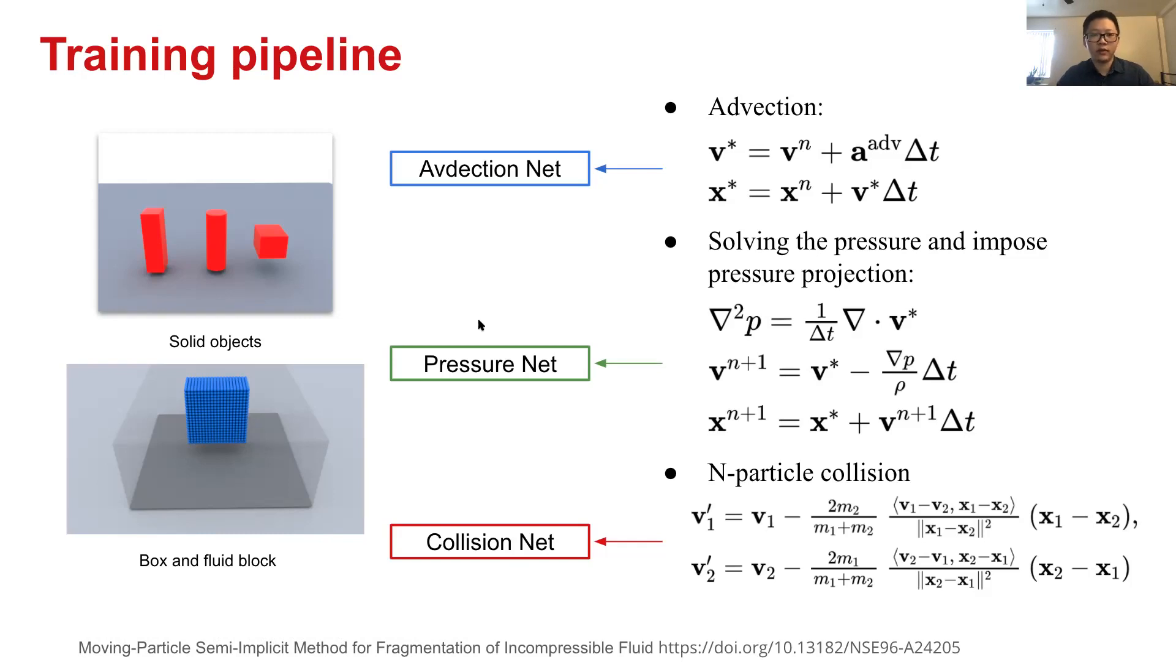After getting this test and train sequence, we extract the advection information to train advection net. We use pressure information to train pressure net. As for collision net, we simulate another simple particle system that is only updated based on the collision rule. We want the collision net to learn to predict an effect that is similar to elastic collision.